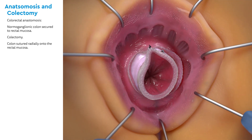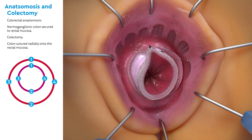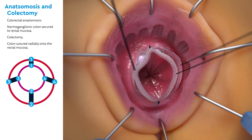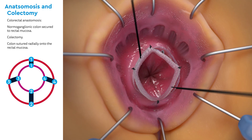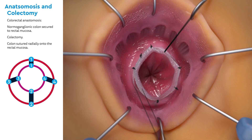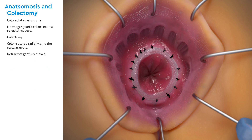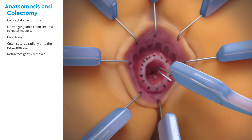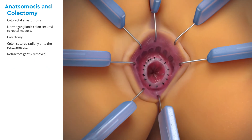The colon is sutured circumferentially onto the rectal mucosa. Note the diagram to the left. Because it is usually an asymmetric anastomosis, it is essential to take care to match the two different sizes of the lumen evenly. Finally, the retractors are gently removed.